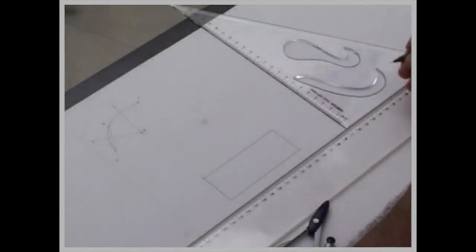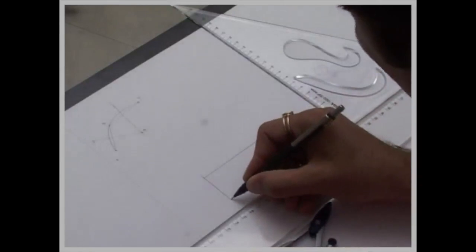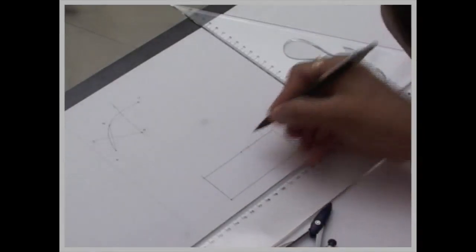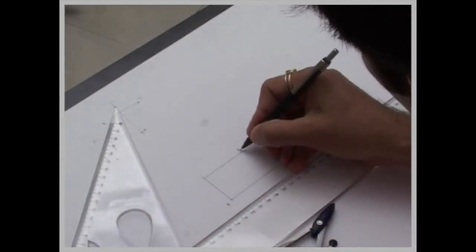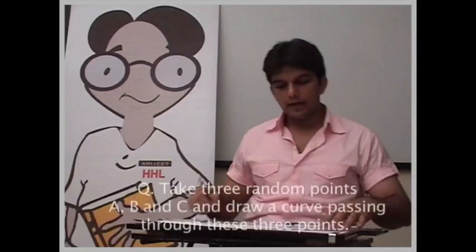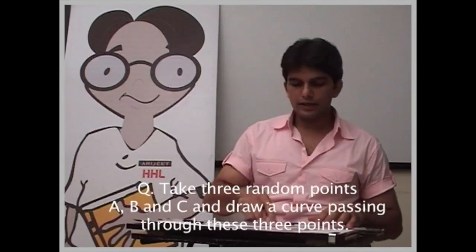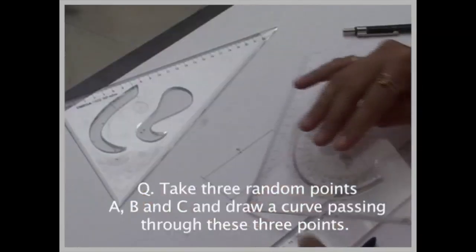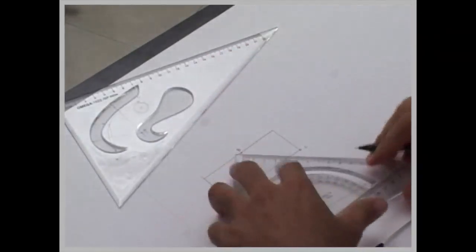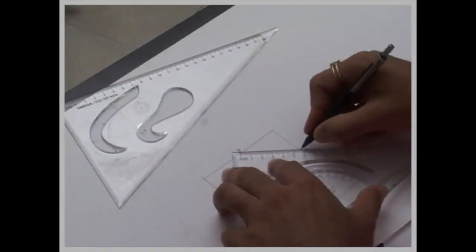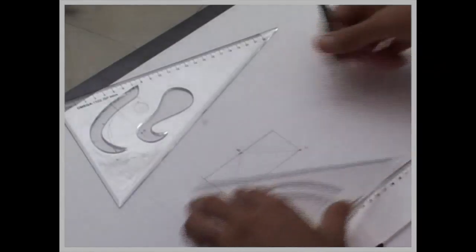Now I am giving you one more example. I have given you a rectangle and let's say there are 3 points - this is a, this is b, and this is c. If I want a curve passing through a, b, c, what I will be doing - first I am joining a to b, b to c.